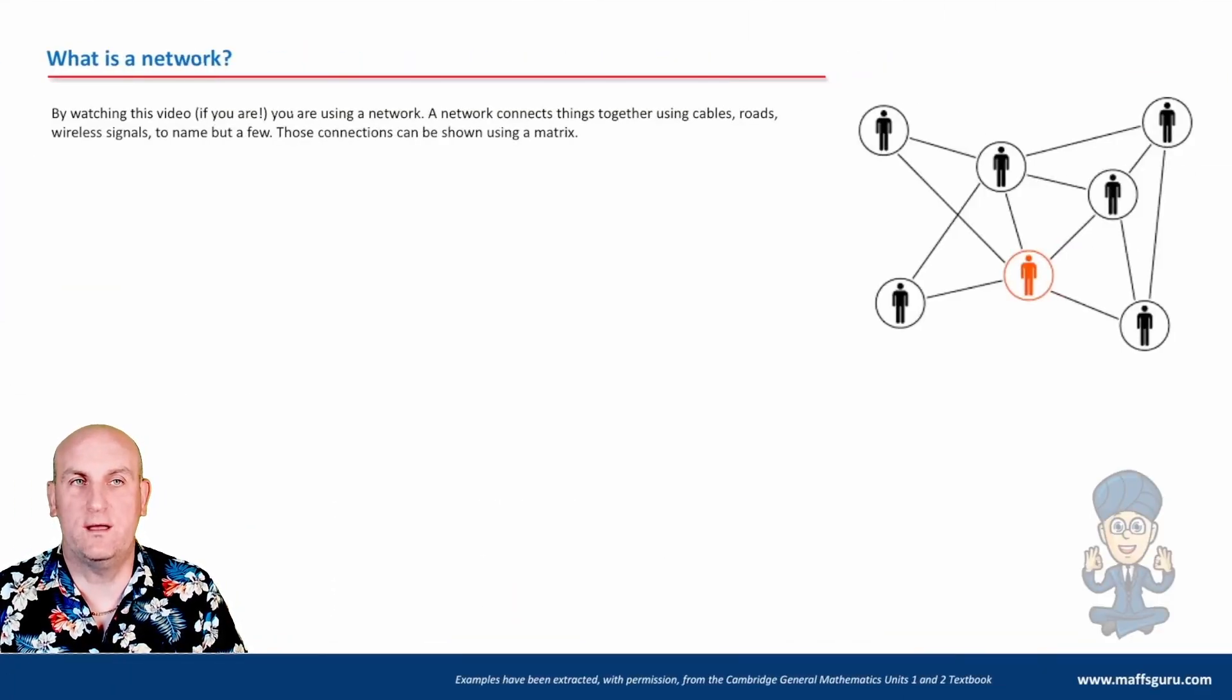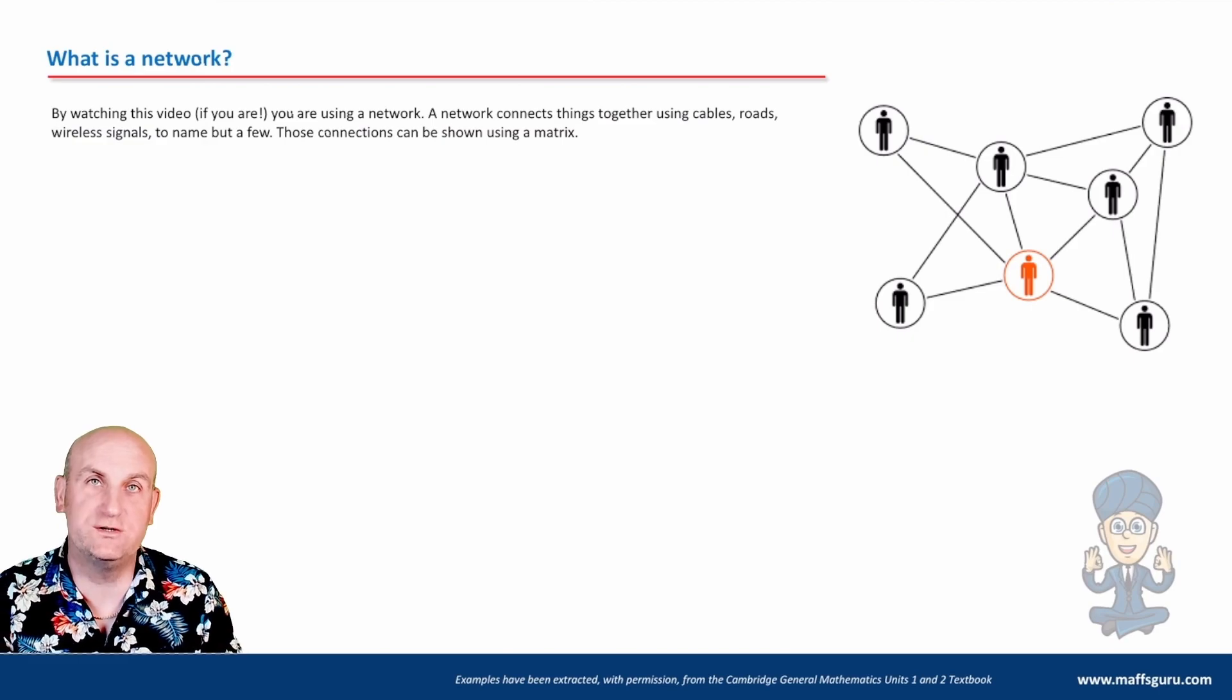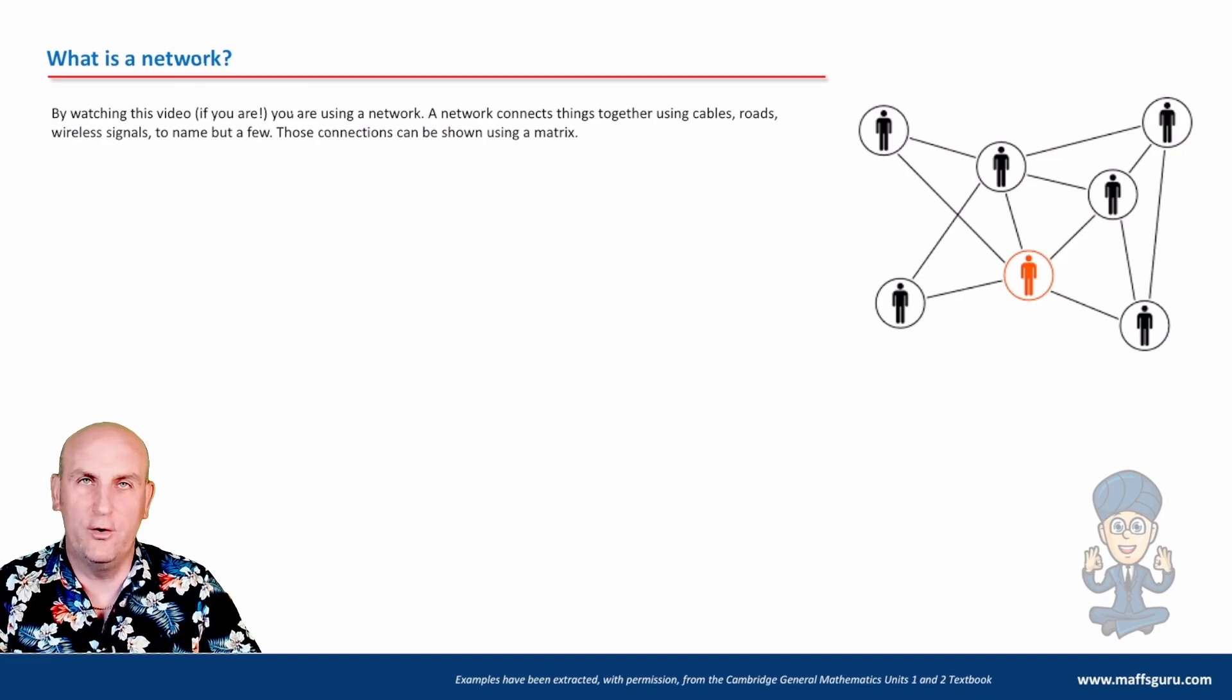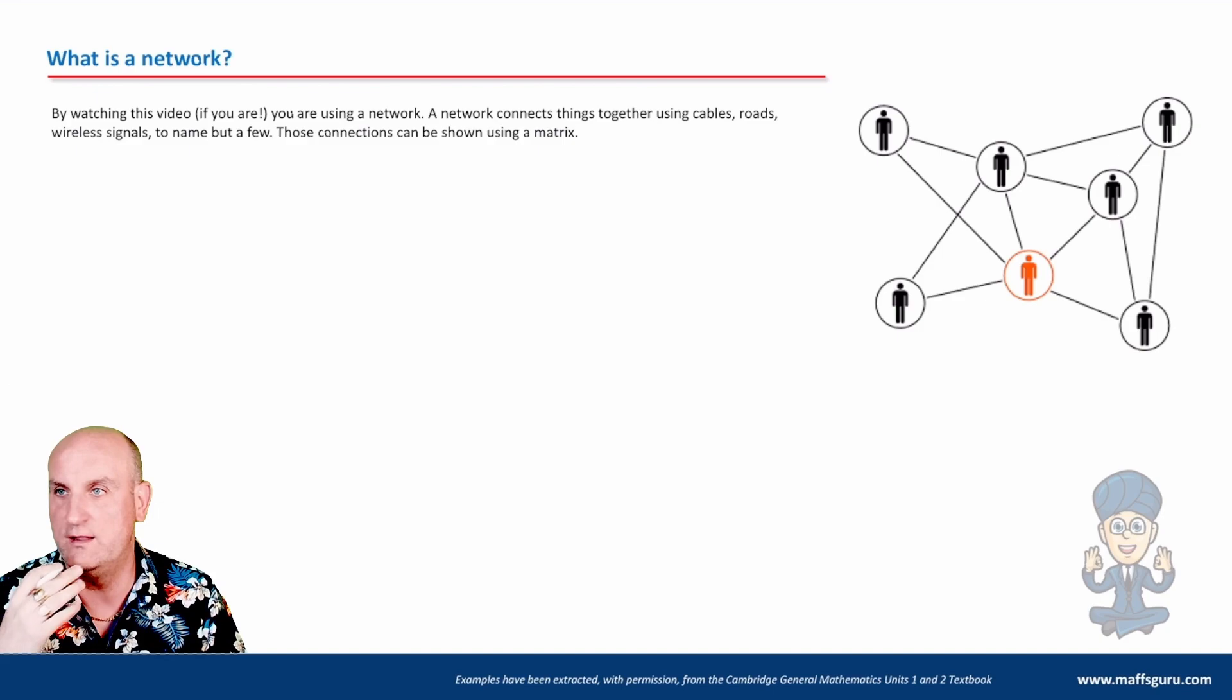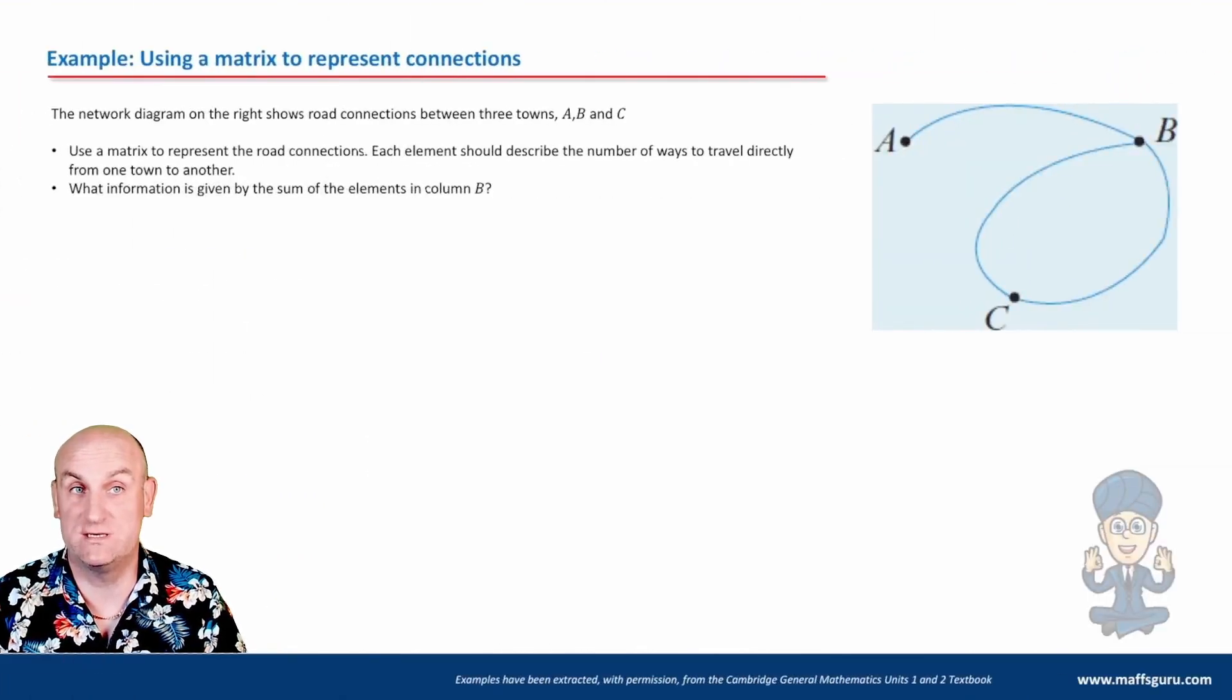Now what is a network? Probably if you're watching this you're connected to a network through the internet. An internet is just a way of connecting people or things. And we can use cables and roads and wireless signals and all sorts of ways to connect. Yes, even funny enough just talking to someone I have made a connection. So you could argue that the air molecules vibrating between us is a connection. And all of these connections can be shown using matrices.